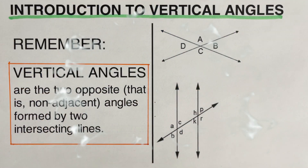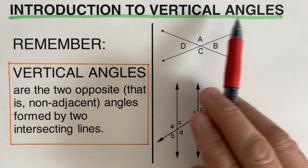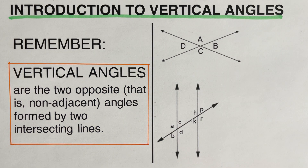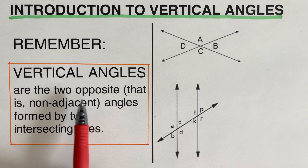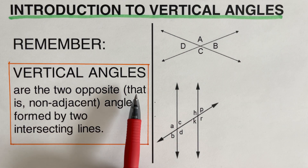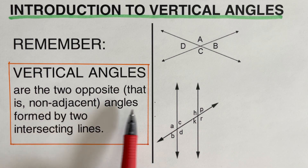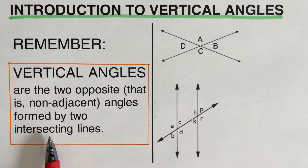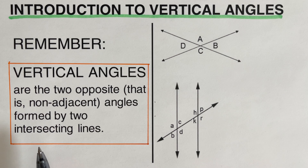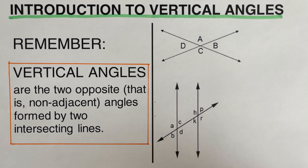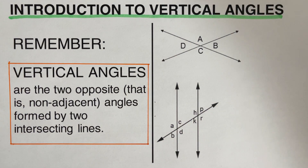Hello everyone. This video will focus on an introduction to vertical angles. By definition, vertical angles are two opposite, non-adjacent angles formed by two intersecting lines. The simplest way to define vertical angles: they are angles that are across from each other.